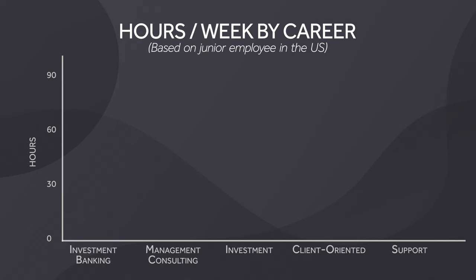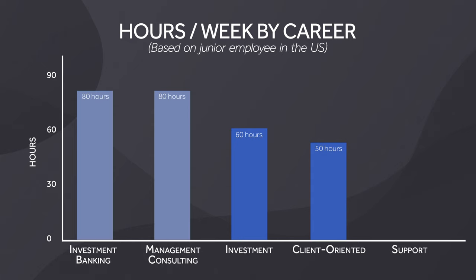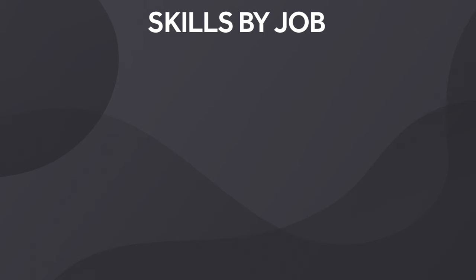Asset management work hours are not like investment banking or management consulting. The investment team, which works the most, is typically around 12 hours a day — about 60 hours a week. The client-oriented sales side is around 50 hours a week, and the support side is around 40 to 45 hours a week. In a big US city like New York or San Francisco, investment team salaries range from $70,000 to $80,000, increasing to around six figures with bonuses. Sales and support roles earn less, but they also work fewer hours.